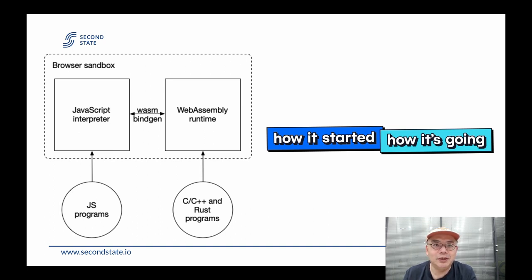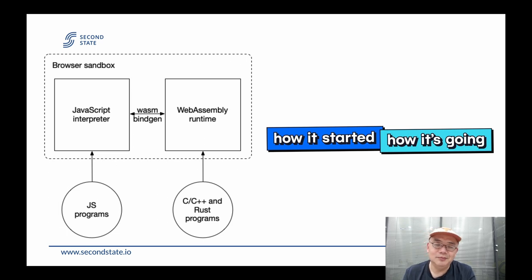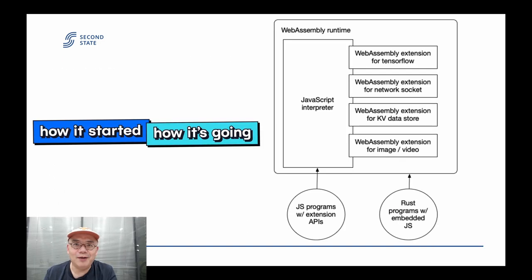So the original design of WebAssembly was really to run compiled applications, not scripting language applications like JavaScript. So what has changed? Why are we talking about running JavaScript inside WebAssembly now? Before we get to why, let's look at how it's done.